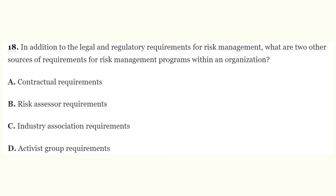Question number eighteen: in addition to legal and regulatory requirements for risk management, what are two other sources of requirements for risk management programs within an organization? A) contractual requirements, B) risk assessor requirements, C) industry association requirements, D) activist group requirements. The correct answers are A and C. Both contractual requirements and industry associations may mandate that an organization has a formalized risk management program.